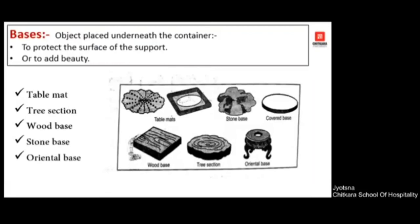The next equipment is base. A base can be any object that you keep underneath your container. It provides support and also provides beauty. Moreover, it also protects the surface on which the flower arrangement has been placed. Various options are available — you can use a stable mat, tree sections, stone base, oriental base, or a wooden piece as a base for the container.